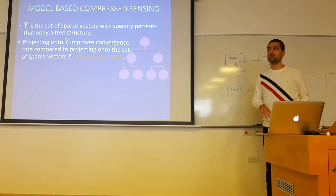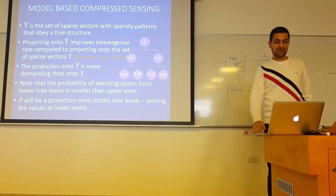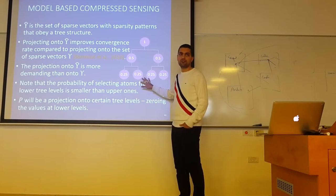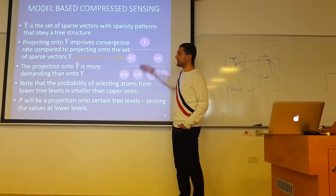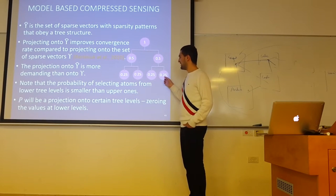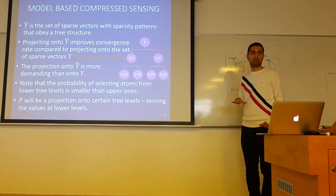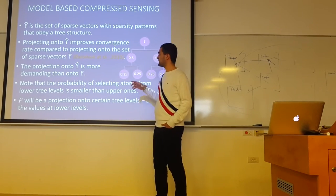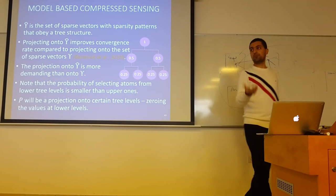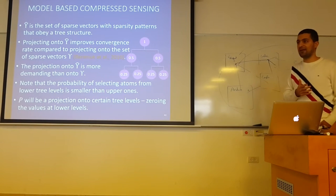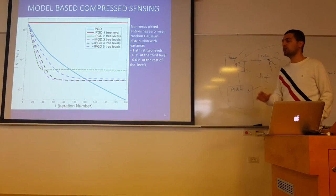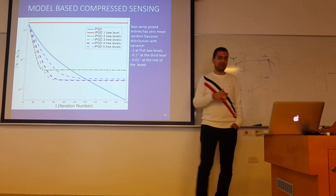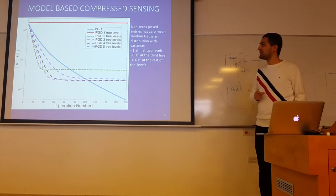We show one example of how to use this. Let's assume our set is a sparsity set but with a tree structure. It was proposed in 2010 that if we have this tree structure, it is possible to project directly onto the tree structure and accelerate the convergence. We show that we can use inaccurate projections to accelerate the convergence of PGD when we have a limited budget in the number of iterations.